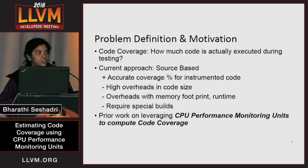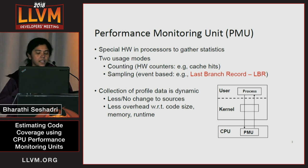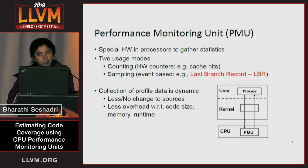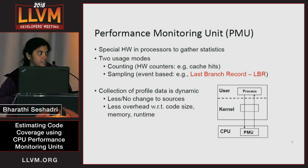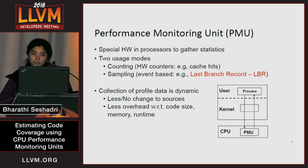In this work, we investigate the idea of leveraging PMUs for computing code coverage. PMUs are special hardware units supported by most modern processors that help gather statistics about program execution. There are two usage modes: counting and sampling. We focus on sampling, and the event we are interested in sampling is taken branches — popularly called last branch record sampling. The collection of profiling data is dynamic, involves no changes to the binary or the sources, and has less overhead as well.